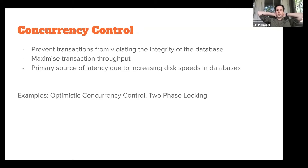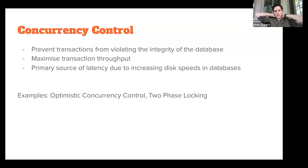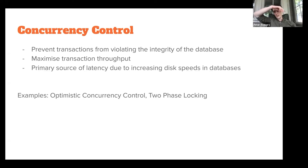The two classic examples of concurrency control are optimistic concurrency control and two-phase locking. Optimistic concurrency control — the basic idea is that you write ahead into the log and then hopefully eventually go back and try to fix what you've broken. There are a bunch of different ways to solve this problem.